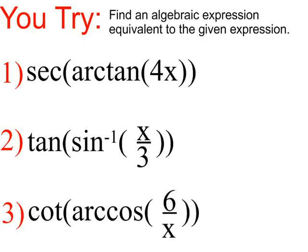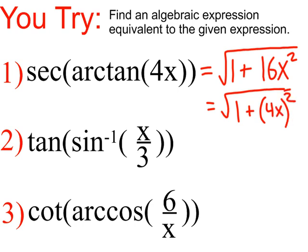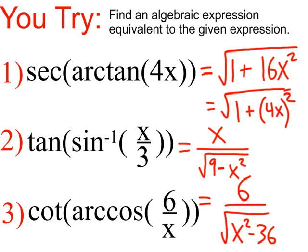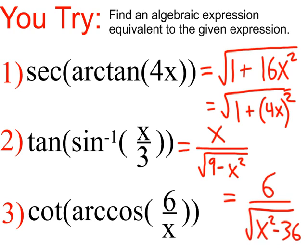Let's bring on the answers. The first one: square root of 1 plus 16x squared. If you had that over 1, that's fine. If you had square root of 1 plus parentheses 4x close parentheses squared, that's fine too. However, if you didn't have these parentheses, that would be incorrect. The second one is x over square root of 9 minus x squared. You could have put 3 squared instead of 9, perfectly fine. And the last one: 6 over square root of x squared minus 36. As always, if any of that didn't make sense, please come by to office hours and let's clear it up.